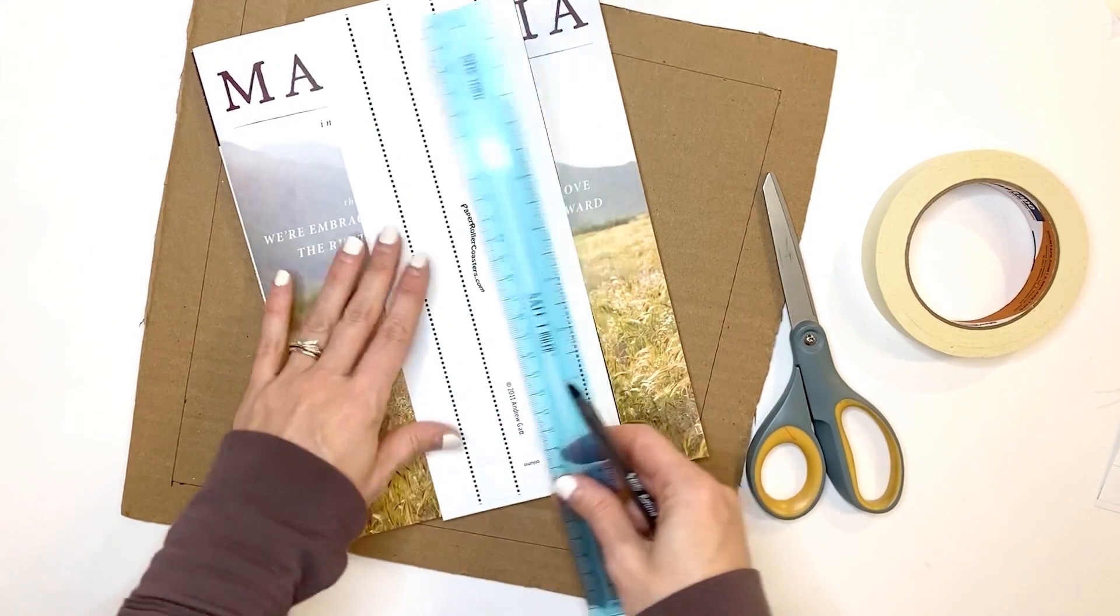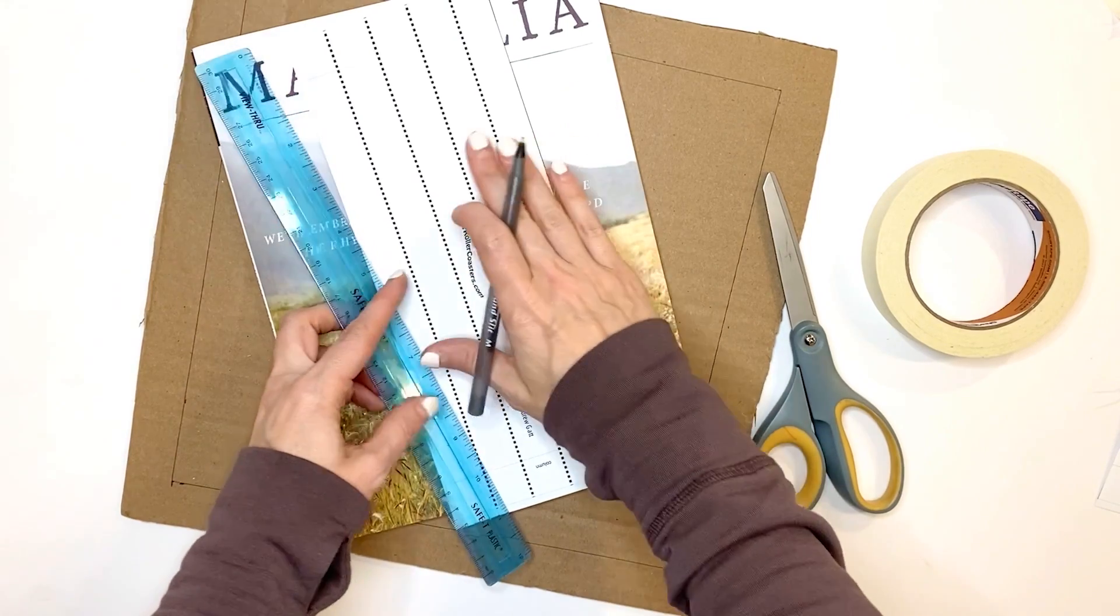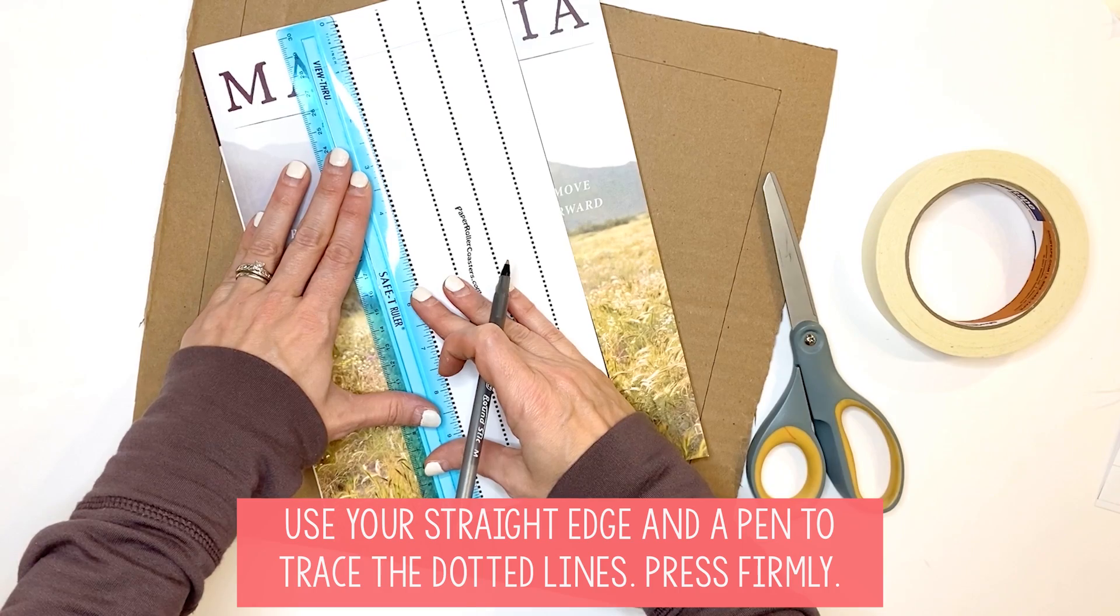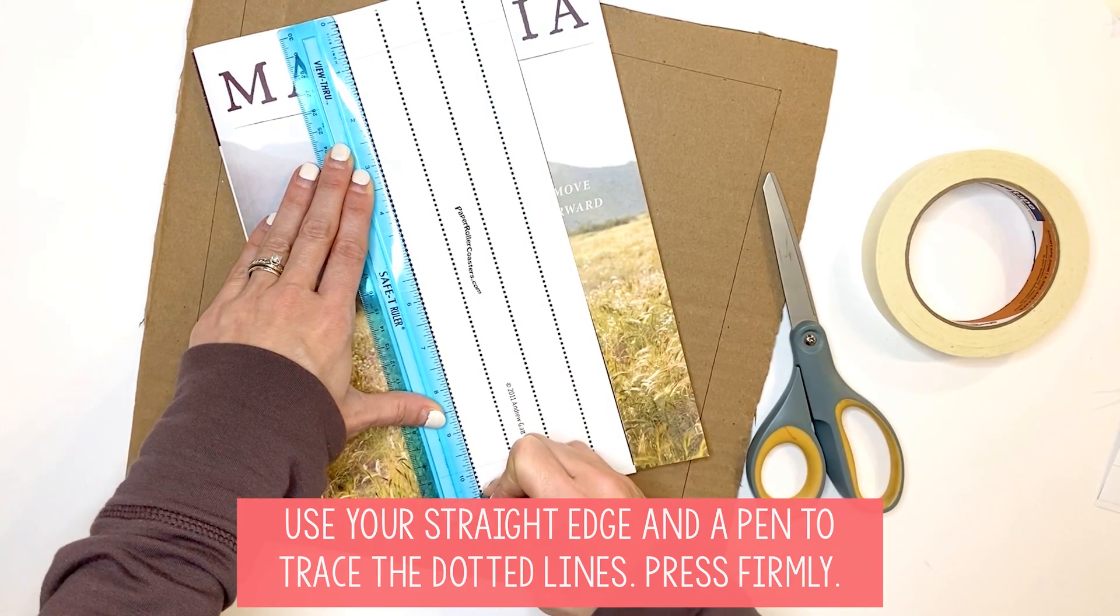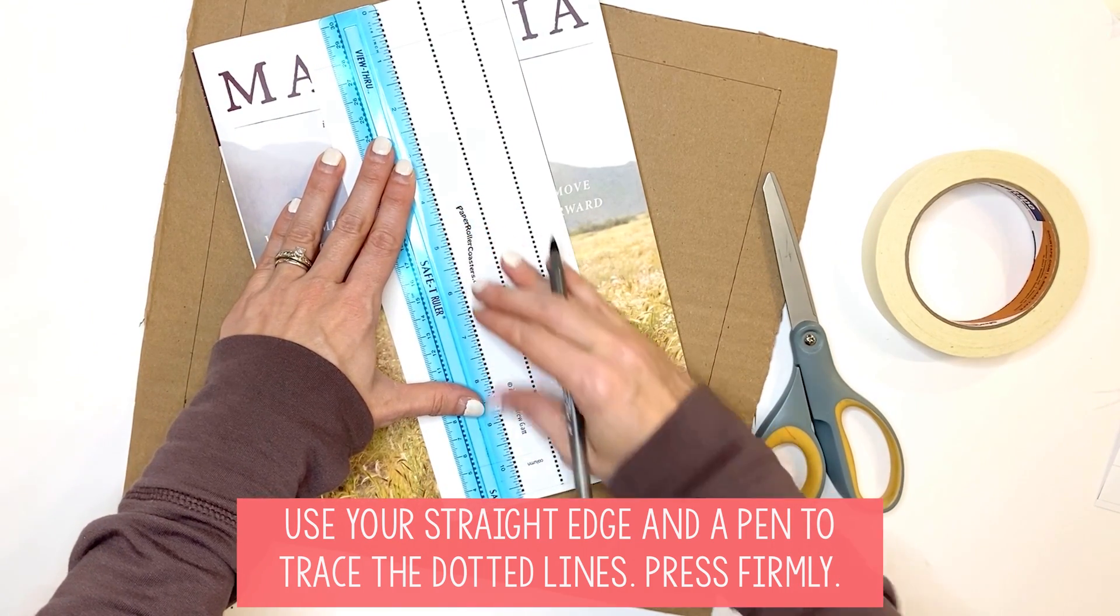Take your straight edge and your pen. Make sure that you have this on top of a magazine. You are going to trace all of these dotted lines. You want to press firmly on this and get it as straight as you can. The reason you're doing this is it's going to help you get nice, clean, straight lines for your columns so that they aren't crooked.